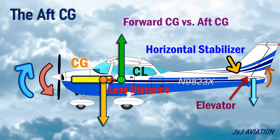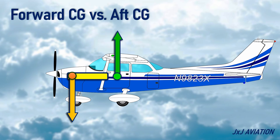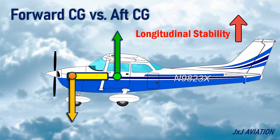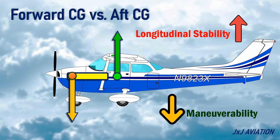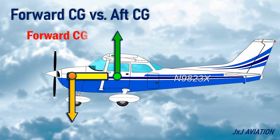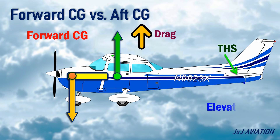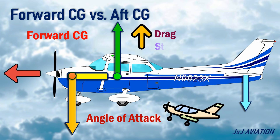Let's compare forward and aft CG. As the CG moves forward, the longitudinal stability of the aircraft increases, meaning the aircraft will strongly resist longitudinal disturbances. However, as stability increases, the maneuverability of the aircraft decreases, because more elevator movement is required to change the pitch of the aircraft. A forward CG causes an increase in drag because of the movement of the THS and elevator for achieving level flight. The downward force from the tail section also increases the effective weight of the aircraft. To maintain steady flight, lift must be increased, so the aircraft must be flown at a higher angle of attack, which increases both drag and stall speed.